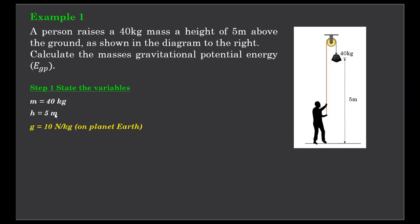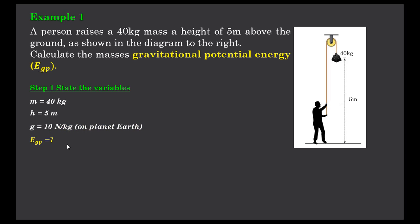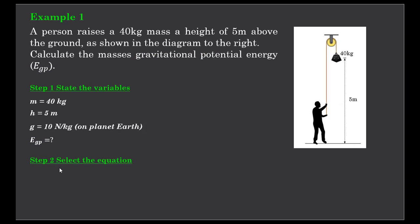Kilograms is the correct unit, metres is the correct unit. And G — any example on planet Earth uses a gravitational field strength of 10 newtons per kilogram. And of course we're after the gravitational potential energy — that's our unknown. There are all our variables: three known and one unknown. The equation we have available is EGP equals MGH.